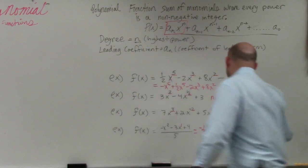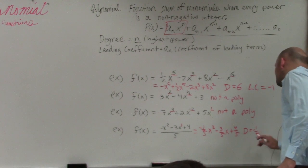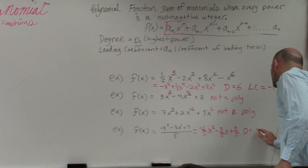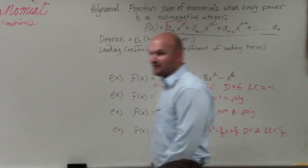So, yes, the degree in this case is negative one-fifth. And my, oh, I'm sorry, the degree is two. The degree is two, and the leading coefficient is negative one-fifth. Does everybody follow me on that?